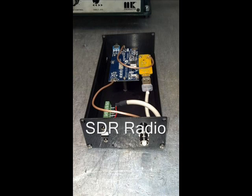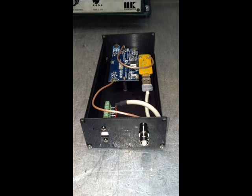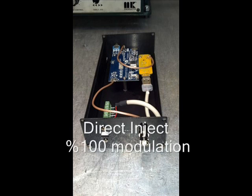Right now I'm transmitting on the Cobra 2000 with direct inject and we're going to switch on over to the motor mouth modulator running exactly 100% modulation. I have both the direct inject and modulator installed on the same radio and we'll be using a tone and oscilloscope to make sure the percents of modulation are exactly the same.